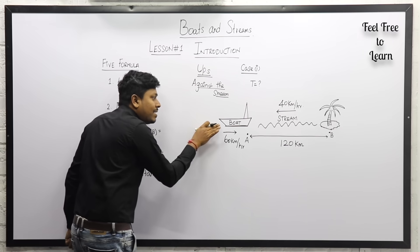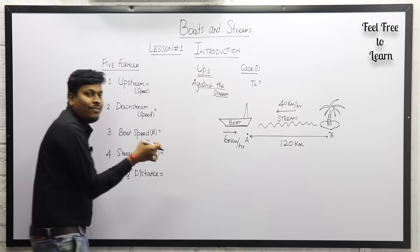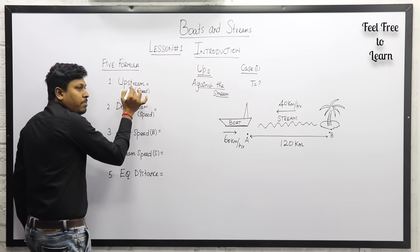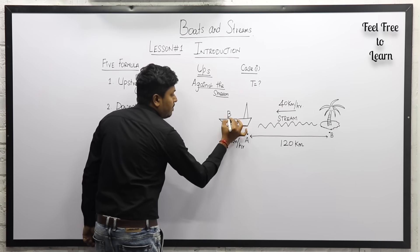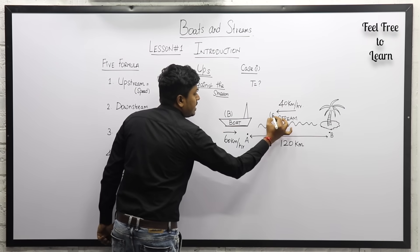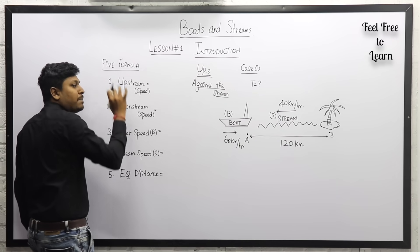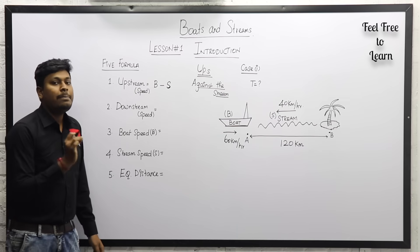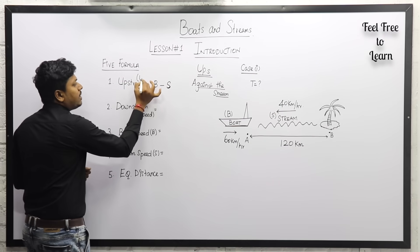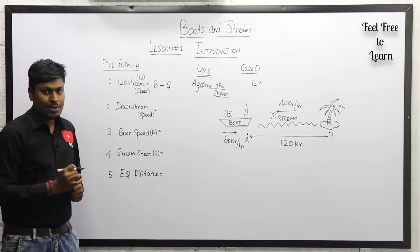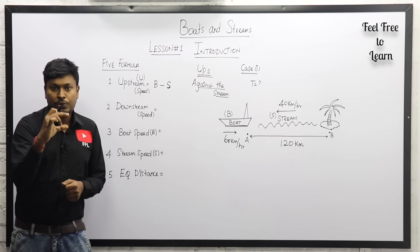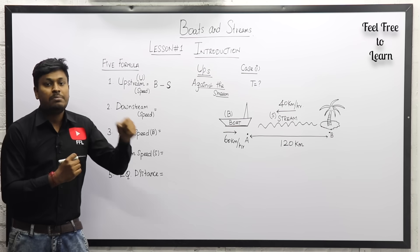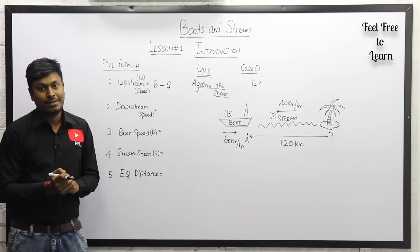When the boat travels against the stream, speed is reduced because of the opposing force. Let the speed of the boat be B and the speed of the stream be S. The upstream speed U equals boat speed minus stream speed: U = B - S. Capital U represents upstream, B is boat speed, and S is stream speed.